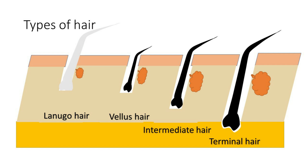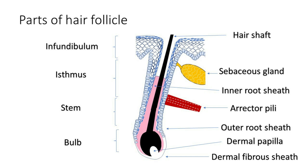Intermediate hair are slightly thicker than vellus hair, with a diameter of approximately 0.03 to 0.06 mm, and their hair bulbs are situated in the reticular dermis. Terminal hair are large hair with a diameter more than 0.06 mm. They usually have a medulla and are often pigmented, with roots situated in the subcutaneous tissue or deep dermis. Please pay close attention to the slide demonstrating the important structures of the hair follicle.